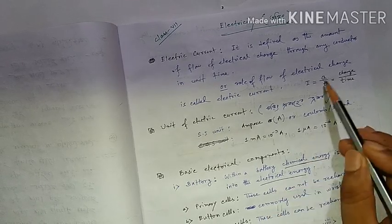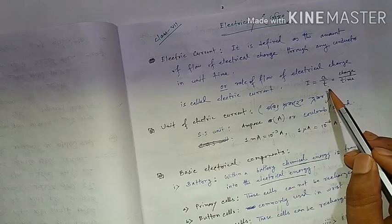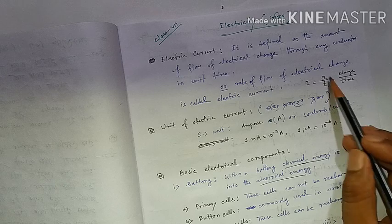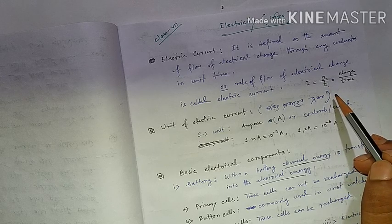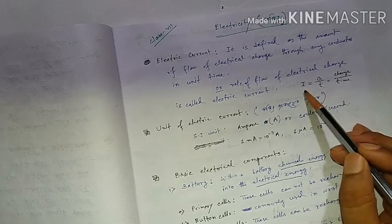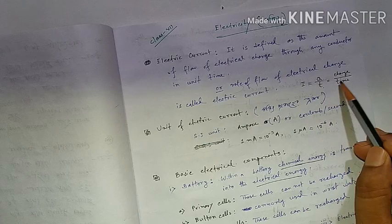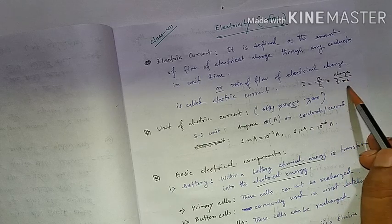Q is the charge. The formula is I = Q/T, where I is the electrical current, Q is the charge, and T is the time.